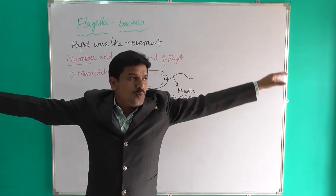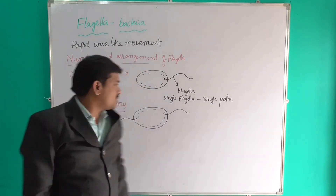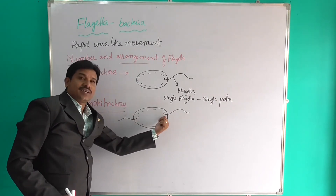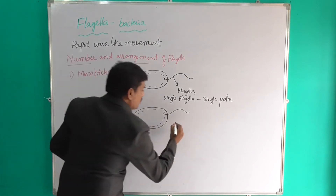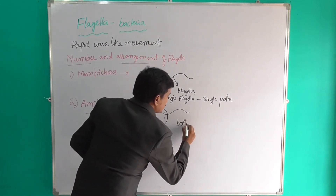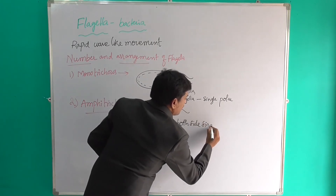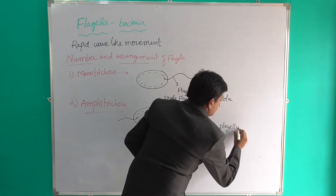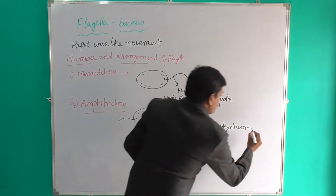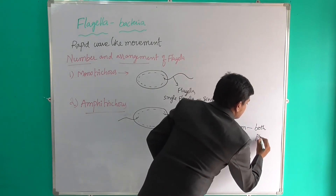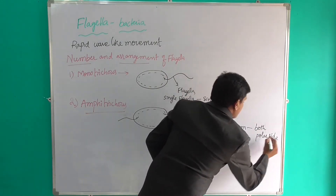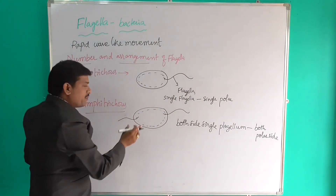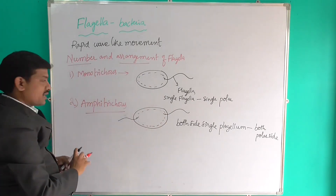Both sides are present. Single flagella which are present in both polar sides — that is called as amphitrichous. So both side single flagella which are present in both polar sides is called as amphitrichous.